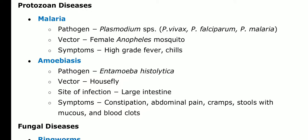Malaria: the pathogen is Plasmodium species. There are various species responsible for malaria — Plasmodium vivax, Plasmodium falciparum, and Plasmodium malariae. The vector is the female Anopheles mosquito. This mosquito carries the malarial parasite in its saliva, and when it bites a healthy person, Plasmodium enters the bloodstream, multiplies in the body cells, and causes disease.